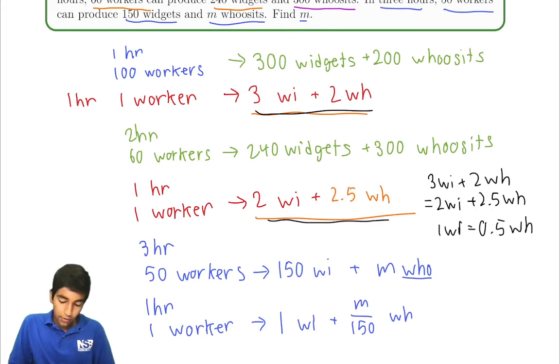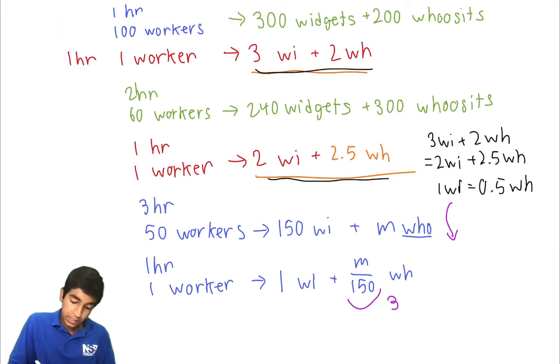So if 1 widget is equal to half a whoosit, then for every 1 more widget we produce, we can produce 1 half less whoosits. So if we reduce the amount of widgets we're producing by 1, because in 1 hour 1 worker can do the same amount of work, if we reduce producing 1 widget, then we can produce half a more whoosits. So in this case, this can be 3 whoosits because we're reducing it by 1 widget and we're increasing this by half a widget because they're equal as we found.